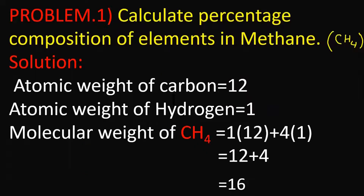Problem number one: Calculate the percentage composition of elements in methane, CH4. The atomic weight of carbon is 12 and the atomic weight of hydrogen is 1. So, 1 carbon is 1 × 12 = 12, and 4 hydrogens is 4 × 1 = 4. So the molecular weight of methane is 12 + 4 = 16.